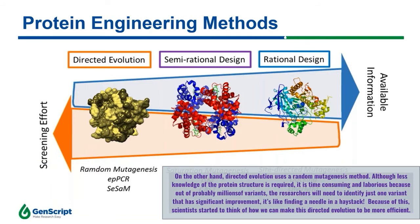On the other hand, directed evolution uses the random mutagenesis method. Although less knowledge of the protein structure is required, it is time consuming and laborious because out of probably millions of variants, the researchers will need to identify just one variant that has significant improvement. It is like finding a needle in a haystack.